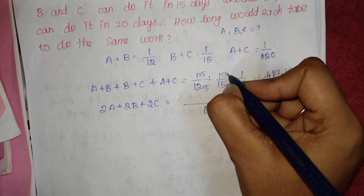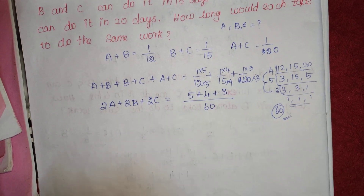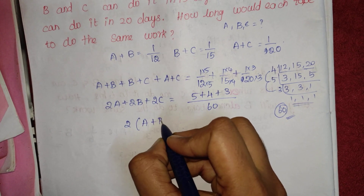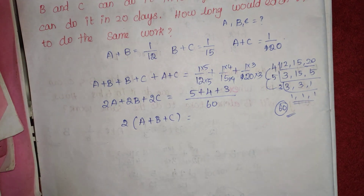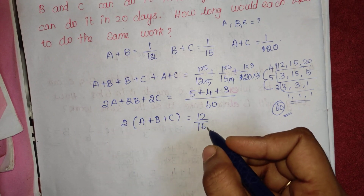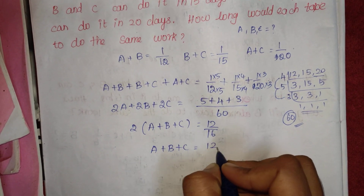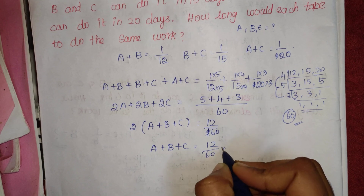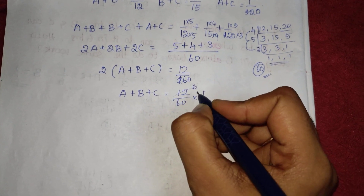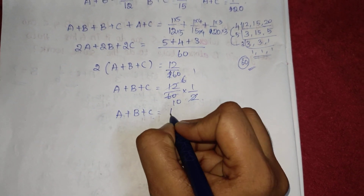So we multiply through using LCM 60. That gives us 5 plus 4 plus 3, which is 12. So 2(A+B+C) equals 12 by 60, which is 1 by 10 — after cancelling. So A plus B plus C equals 1 by 10.